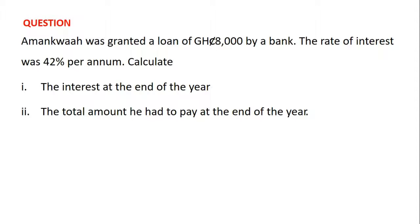The problem is: Amankwa was granted a loan of 8000 Ghana cedis by a bank. The rate of interest was 42% per annum. Calculate (i) the interest at the end of the year, and (ii) the total amount of money he had to pay at the end of the year. So a bank gave Amankwa a loan of 8000 Ghana cedis and the rate of interest on the loan was 42% per annum.